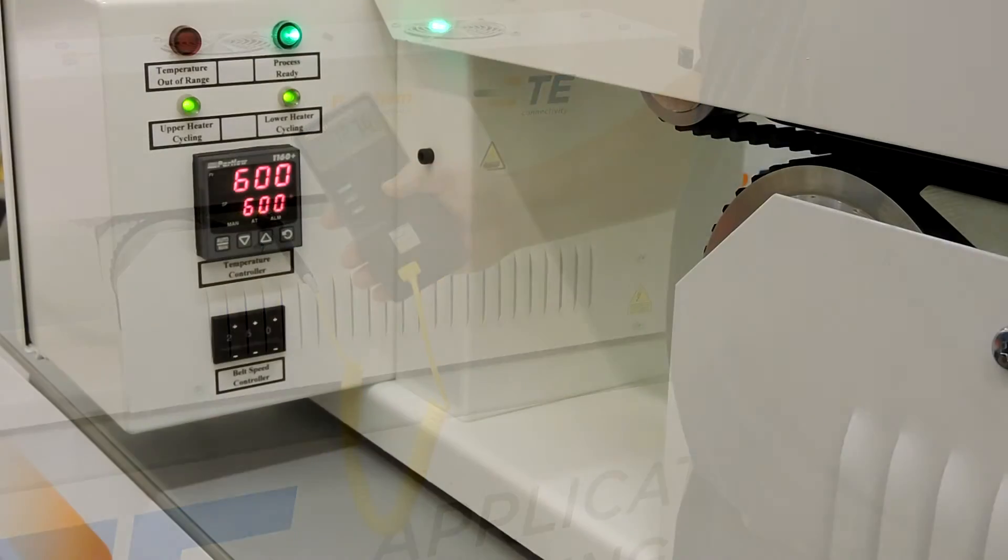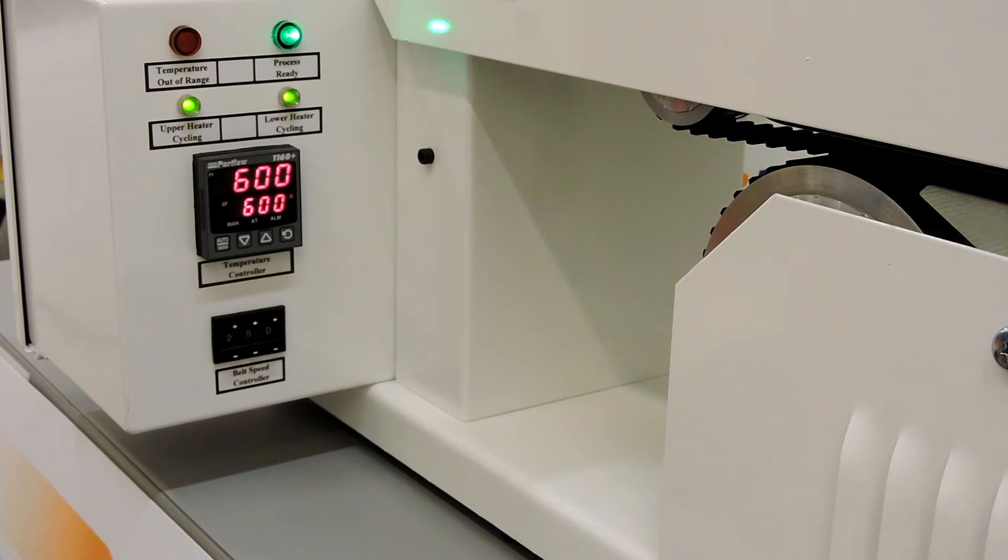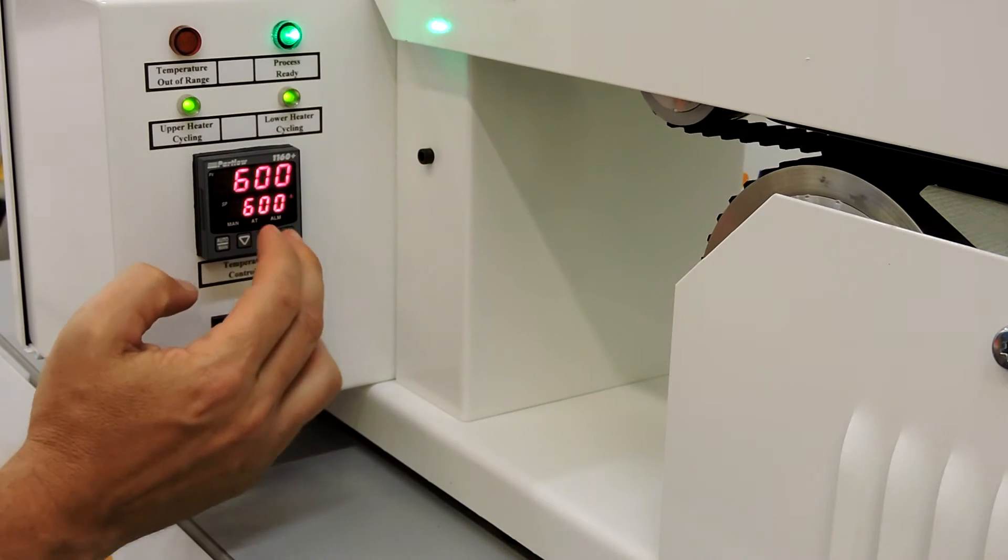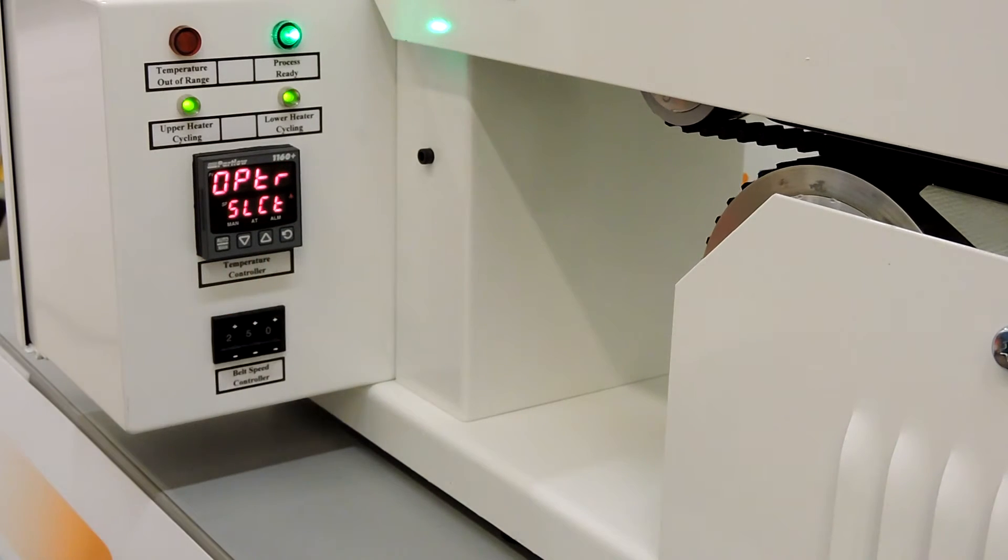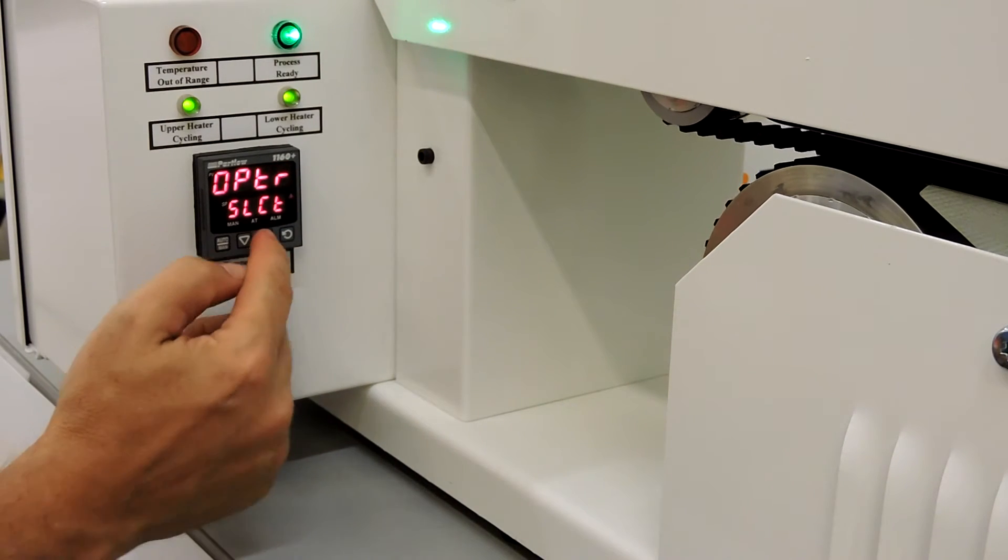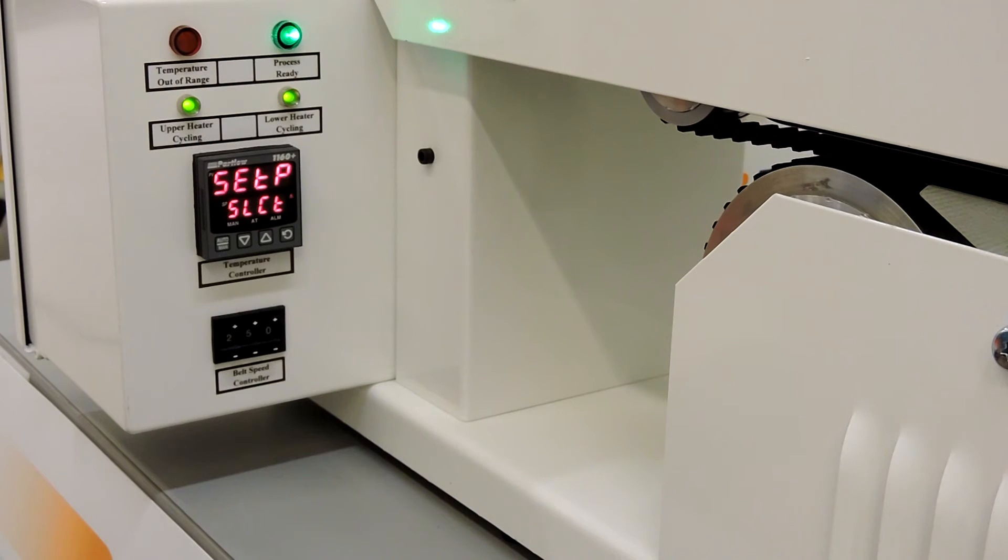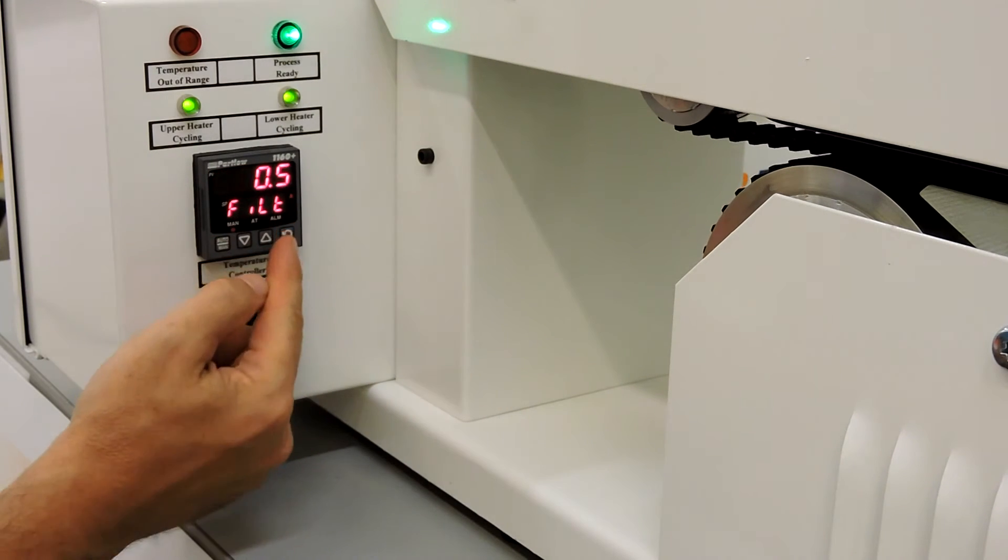If probe temperature reading is outside 130 plus or minus 5 degrees, press the scroll key and up arrow key to access the operator mode. Press the up arrow key once to display the setup mode. Press the scroll key twice to display the offset mode.